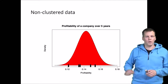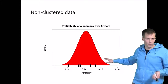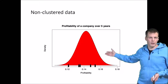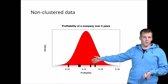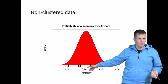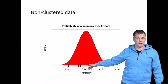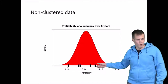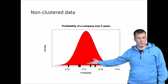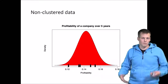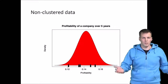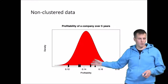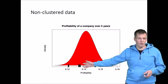We have here our profitability data for a company — five observations for a single company. The average profitability for this company is about 14%, and the individual observations vary randomly around that average because companies sometimes have good years, sometimes bad years. So there is always some year-to-year variation.